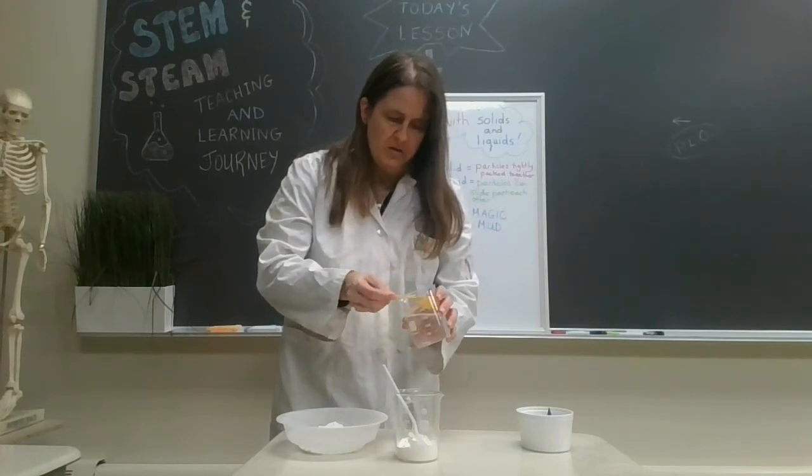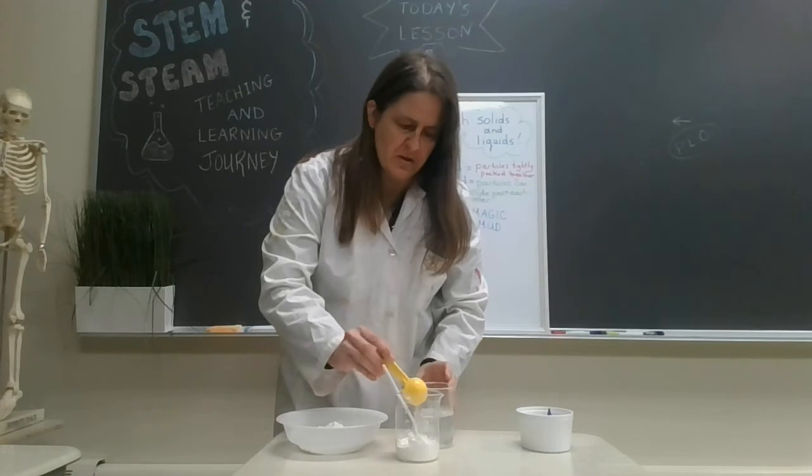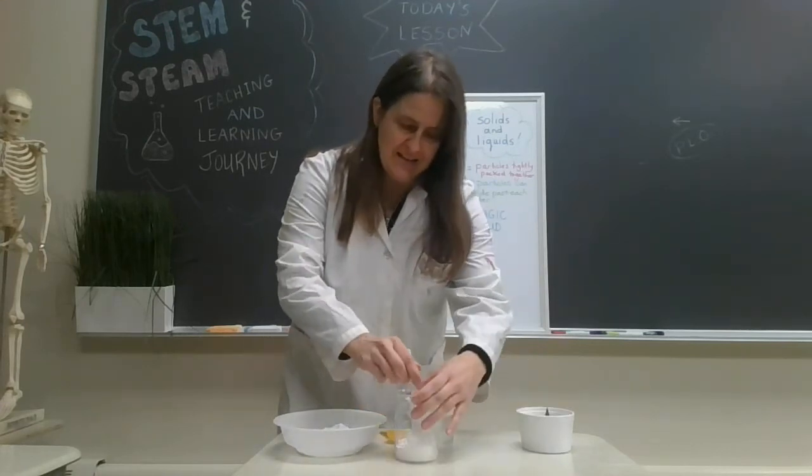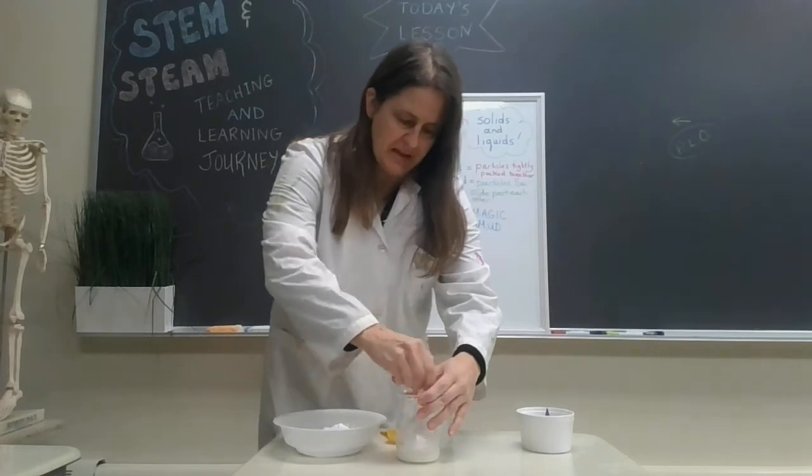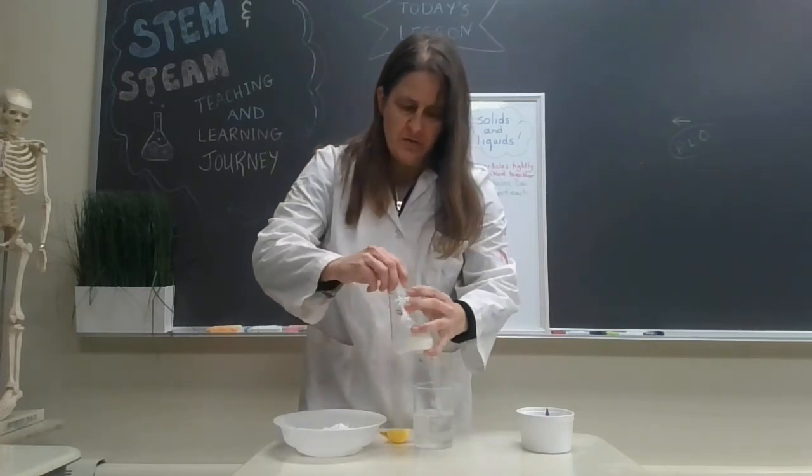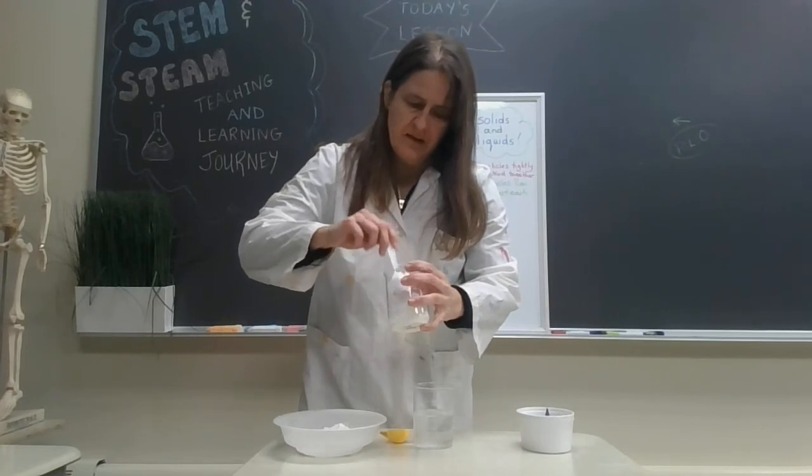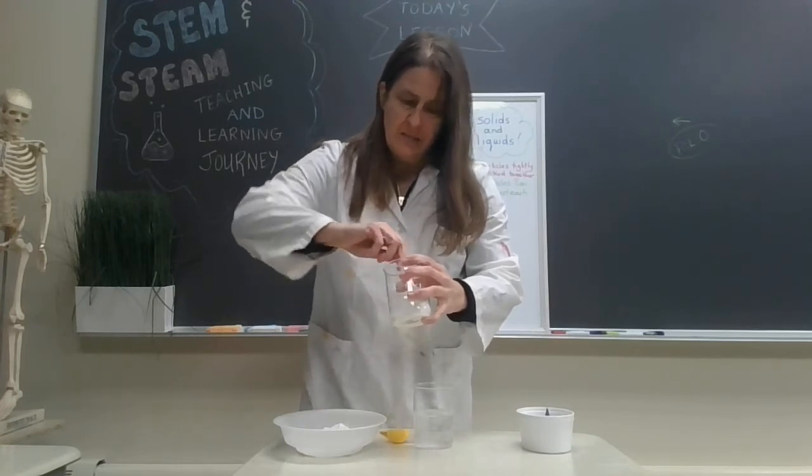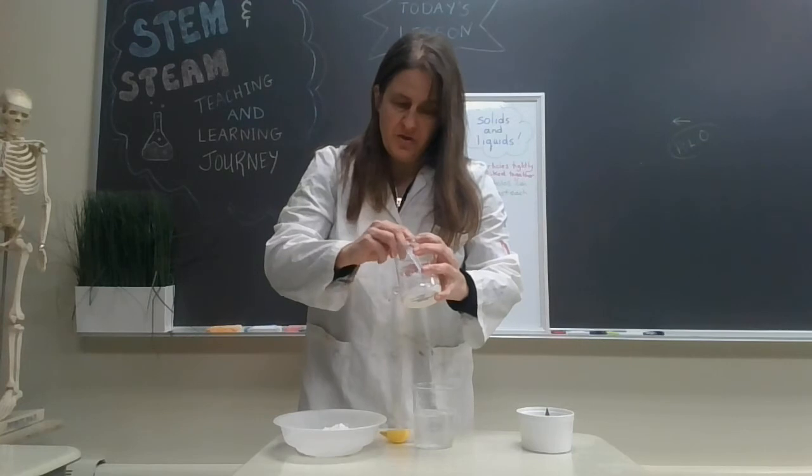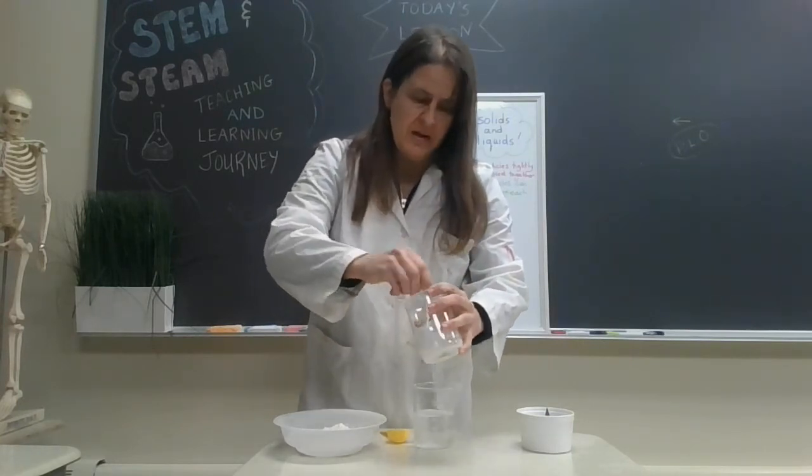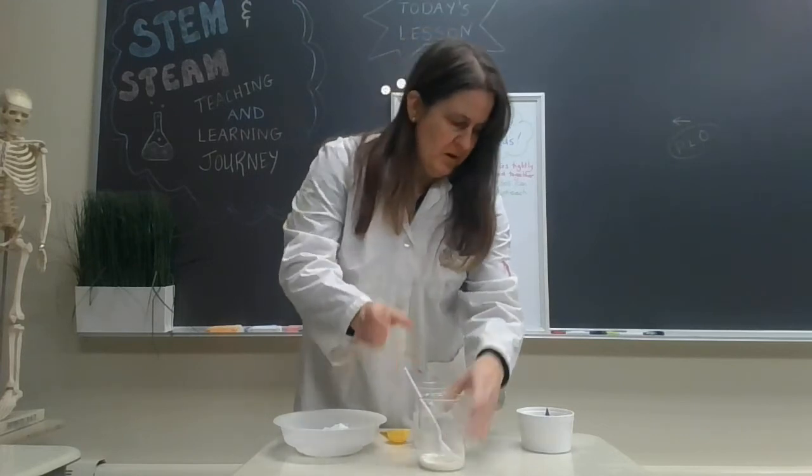So again, the ratio is roughly two parts cornstarch to one part water. And kids in my class always like to add a little bit of food coloring to make it look fun. Students and teachers, just a warning about food coloring: it will stain your clothing if you get it on there, so you have to be careful with food coloring.